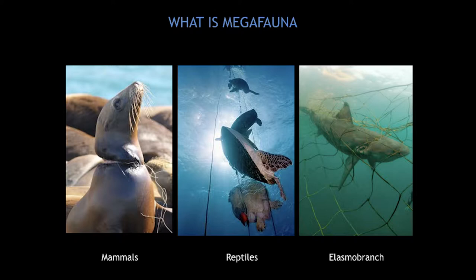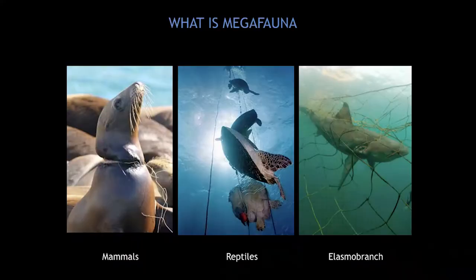What is megafauna? Literally translated, 'mega' is large and 'fauna' is animals — so we are talking about large animals. Mainly the marine mammals, which include seals, sea lions, dugongs, manatees, whales, and dolphins. We are also going to focus on marine reptiles, mainly saltwater crocodiles and sea turtles. And the last group, of course, includes sharks, skates, and rays.